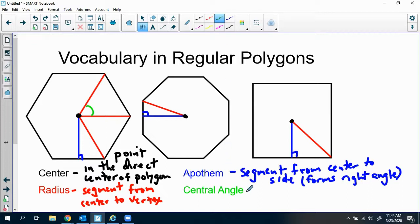The central angle is the same as it would be in a circle. So the central angle is the angle formed by two consecutive radii.